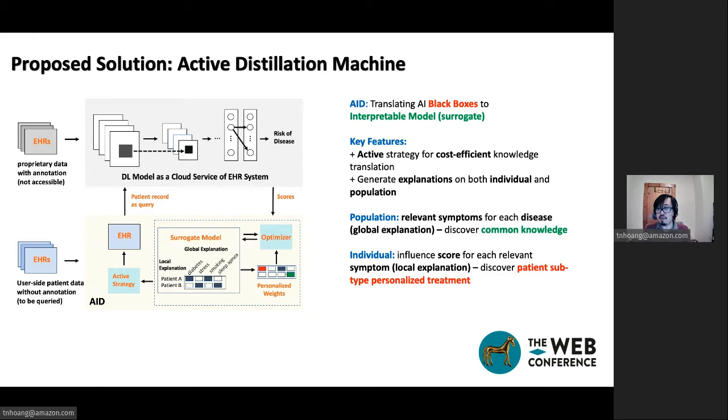The key feature of this framework will be an active strategy for knowledge distillation and an interpretable representation that can be used by the domain expert to extract population representation and individual representation in the healthcare context. For example, the population explanation will inform directly the relevant symptoms for disease, whereas the individual explanation will generate an influence score for its relevant symptom.